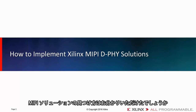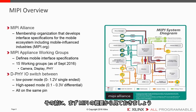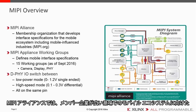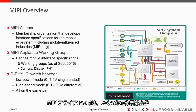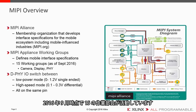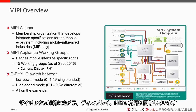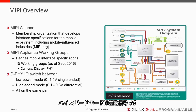Now that you know how to find these MIPI solutions, let's look at how to implement the Xilinx MIPI DeFi specific solutions. MIPI is an alliance — a membership organization that develops interface specifications for the mobile ecosystem, including mobile-influenced industries. You can find more information on MIPI.org. The MIPI alliance has working groups that define mobile interface specifications; there are 15 as of September 2016. Xilinx is specifically in the camera, display, and PHY areas. The DeFi has an I/O that switches between low-power mode (single-ended) and high-speed mode (differential), all on the same pin.